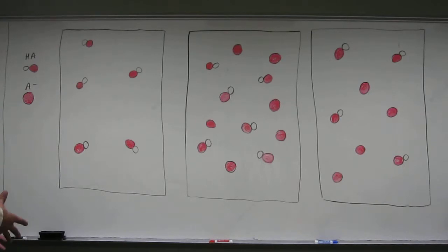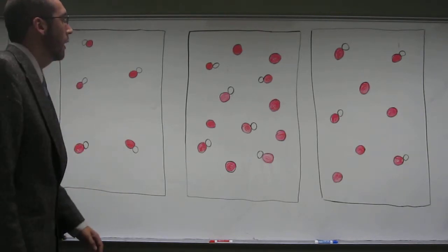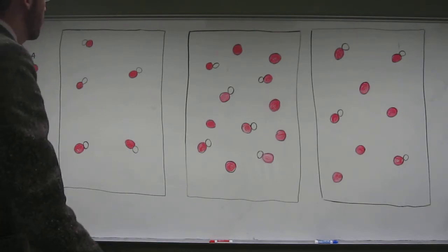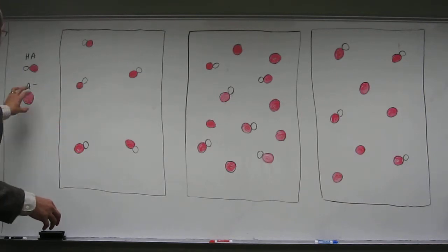So remember what we have to have in order to have a buffer solution. We have to have a mixture of HA and A minus, its conjugate base, or the salt of its conjugate base, which the cations aren't being represented in these pictures. So when we're looking at these different representations, in order to have a buffer solution, we have to have this present and this present.